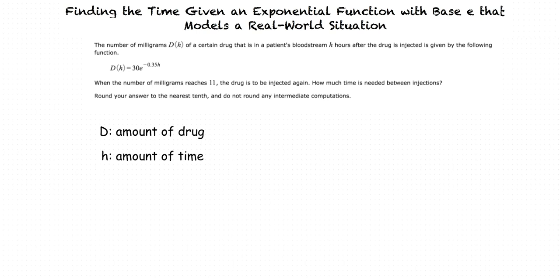The problem also states that the number of milligrams must be 11 before another injection is administered. So where should we use that number 11? You said the number of milligrams must be 11 — which variable stands for the number of milligrams? D of H. Right, so we replace D of H with 11. Exactly. Now we see that 11 is equal to 30E to the negative 0.35H.